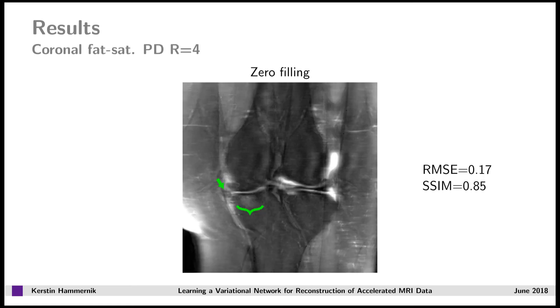Next, I show you results for coronal proton density scans with fat saturation, which have a much lower baseline SNR. This image here shows the zero-filled solution of a 57-year-old female, where the green bracket indicates broad-based full thickness cartilage loss and a subchondral cystic change, and the green arrow depicts an extruded and torn medial meniscus.